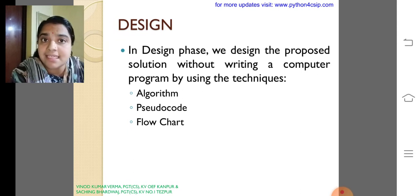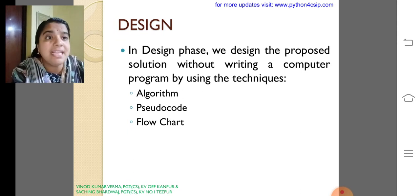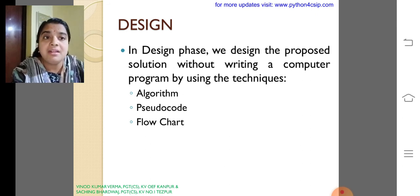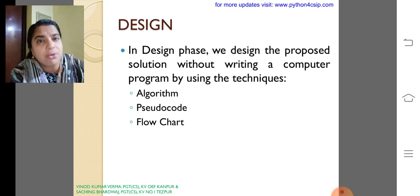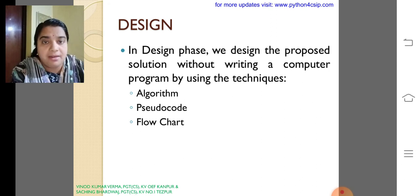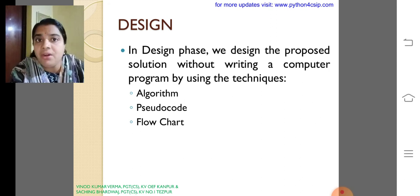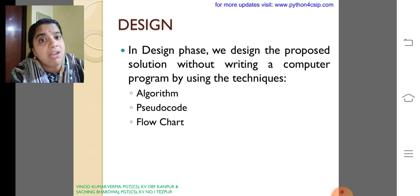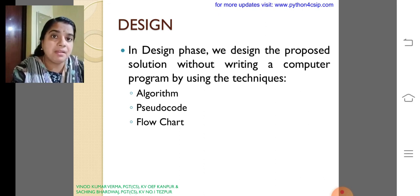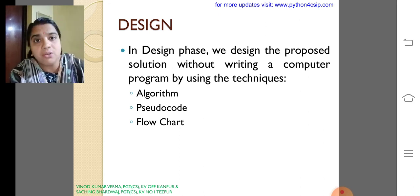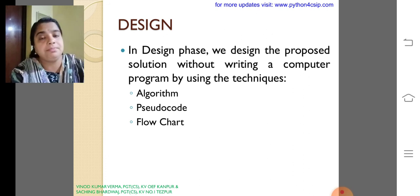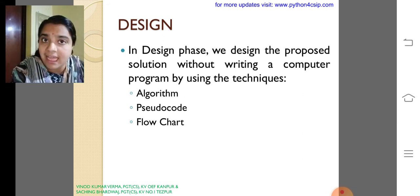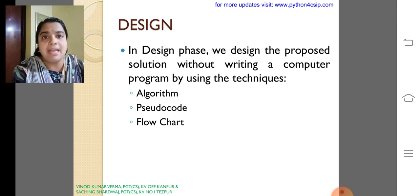Then the next one is design. In design phase we design the proposed solution without writing a computer program by using a technique. Without writing any program you can design the problem solution either using algorithm or pseudo code or flow chart. These are all the three main ingredients to get the solution without writing a program. By knowing the algorithm, pseudo code or flow chart, we can easily write a program code either in Python, C, C++ or in Java. If you know the algorithm, if you can write the algorithm, then it will be easy for you to write any program.